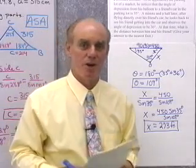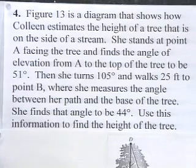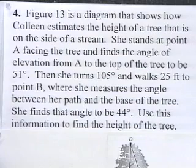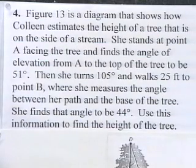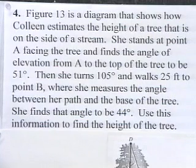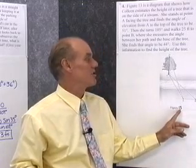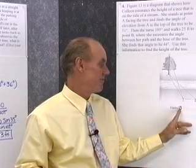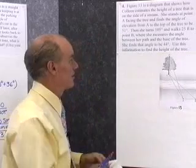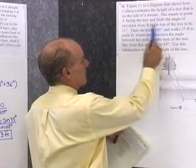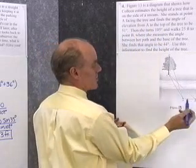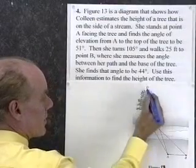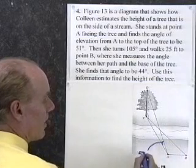Let's work another application problem involving the Law of Sines. The diagram shows how Colleen estimates the height of a tree on the side of a stream. She stands at point A facing the tree and finds the angle of elevation from A to the top of the tree to be 51 degrees.